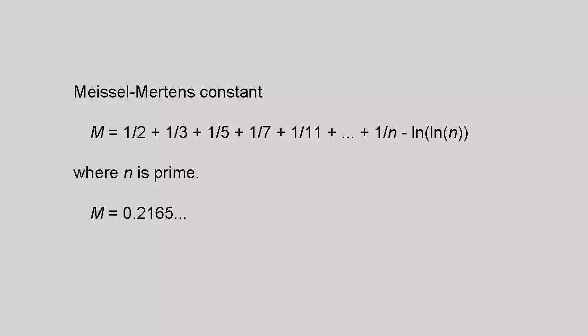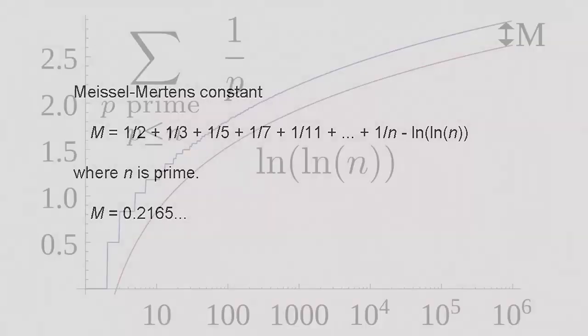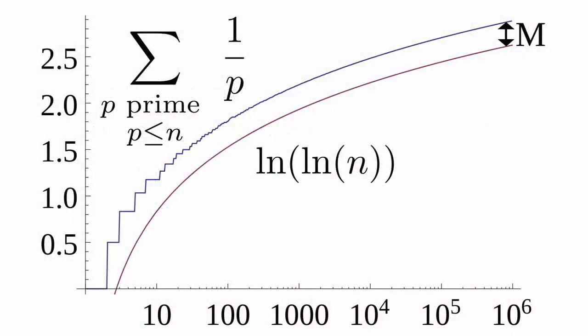The sum of reciprocals of primes diverges incredibly slowly, as shown by the fact that the difference between it and the natural log of the natural log of n is only m equal to approximately 0.2615. Although it's known that the natural log of the natural log of n diverges to infinity, you would never guess it by the rate at which it grows.